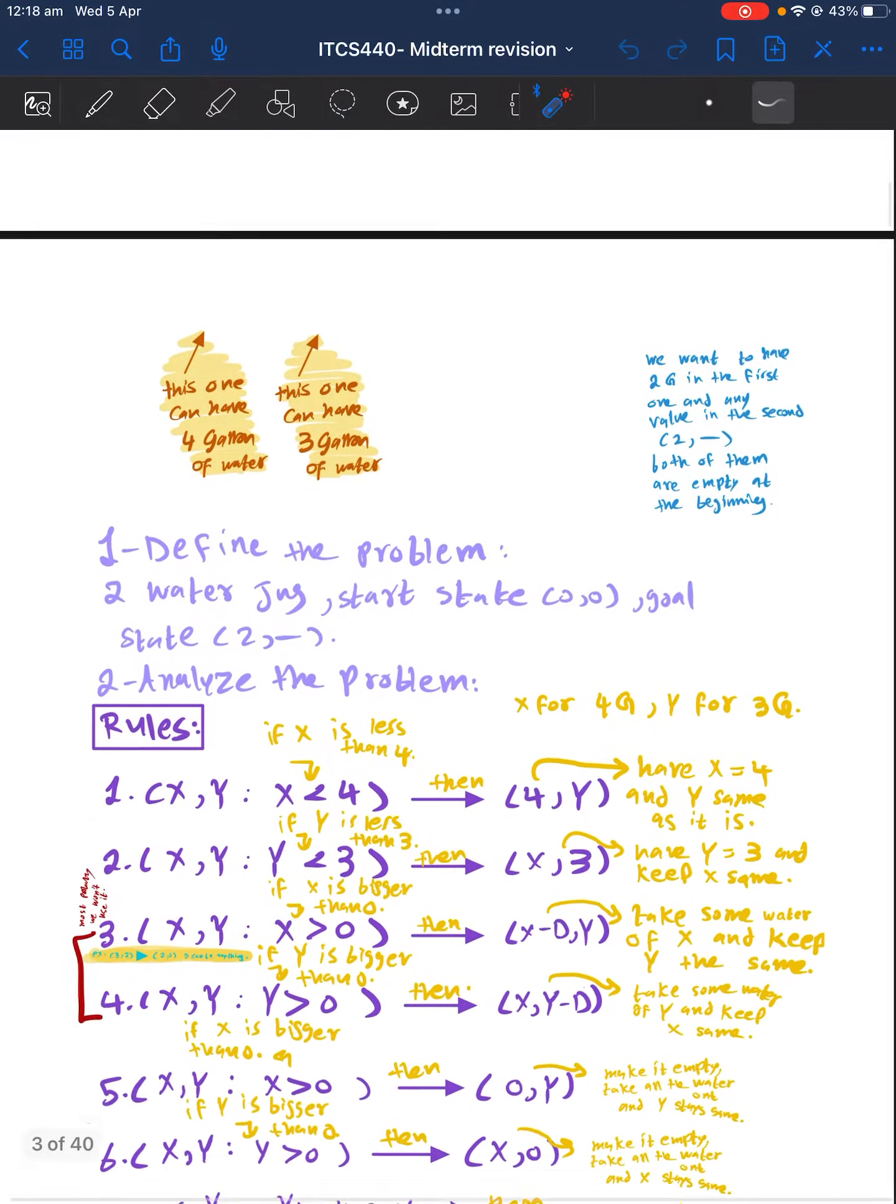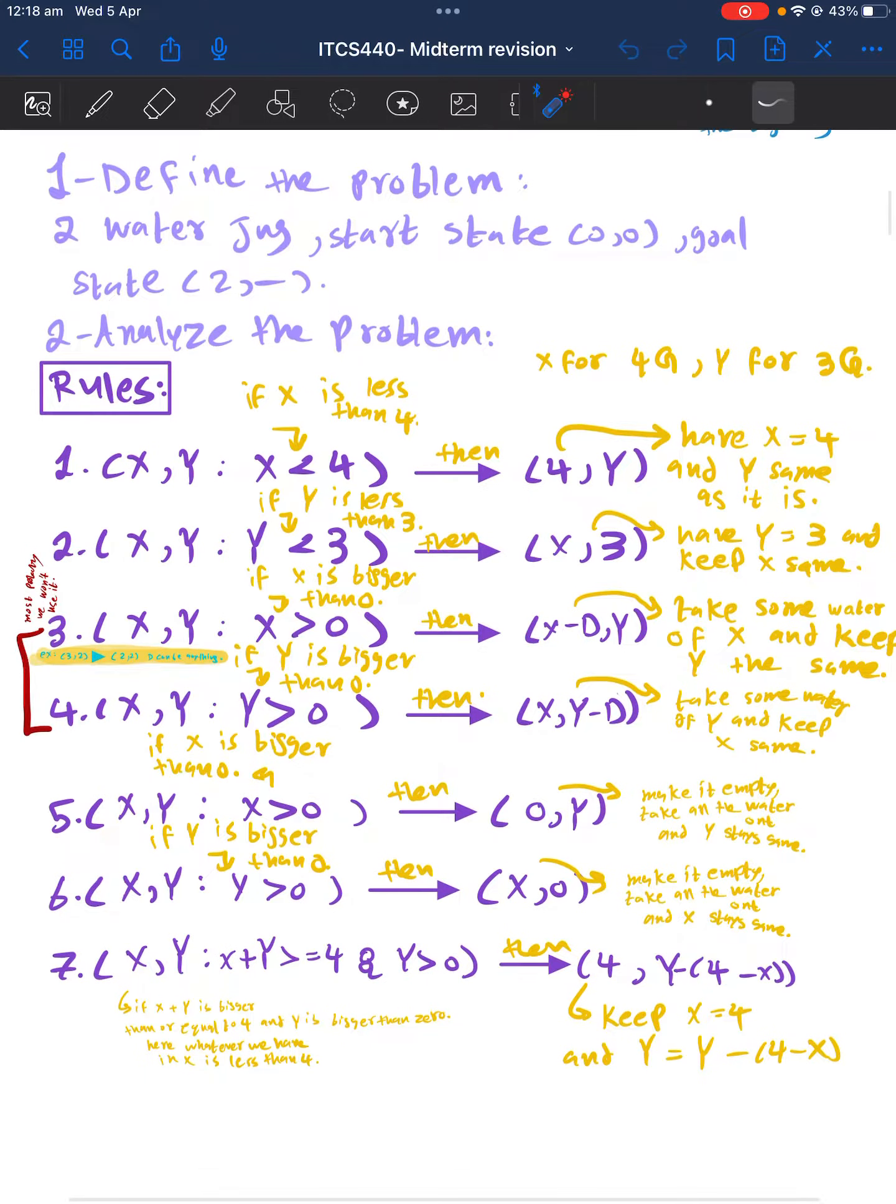So here we will say if X is less than 4, so if the first one has less than 4 gallons, we will just fill it to 4 and we don't care about the Y, we'll keep it the same. We will do the same thing with the Y, but if it's less than 3 because it can hold up to 3, so we don't care about the X, we will have it stay the same and we will change Y to 3.